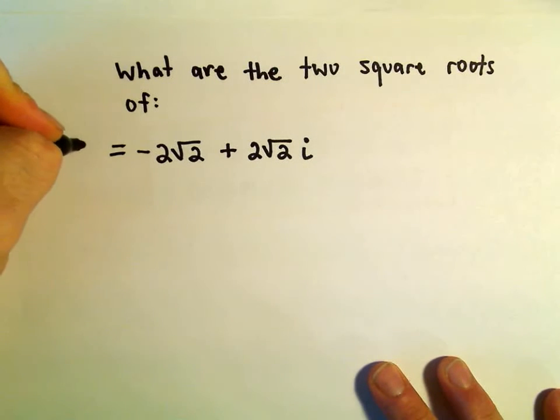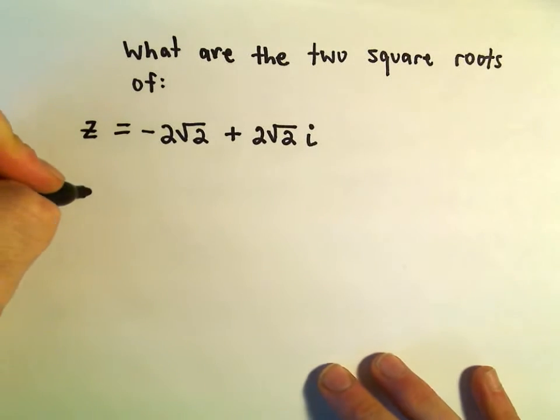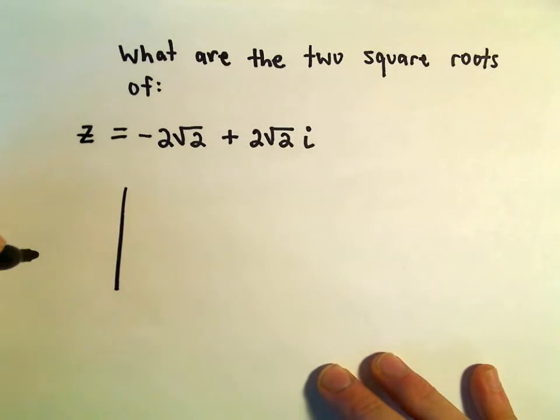So the first thing I'm going to have to do is rewrite my number in this polar form. Okay, so here's our complex number, we'll call it z. Again, to get our, well I guess first let's sketch it.